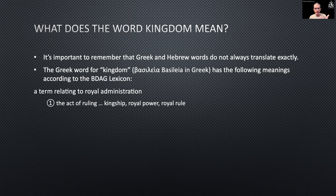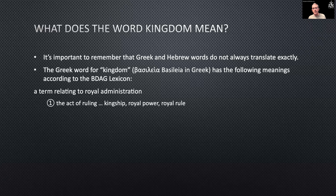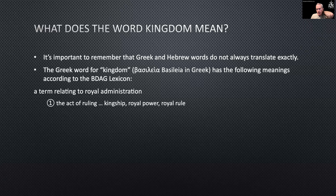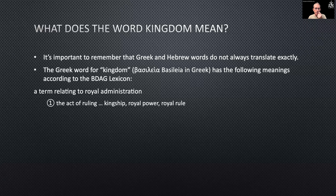When we use the word 'kingdom,' we don't mean any of that — we mean a place. Like the Kingdom of Brunei, the Kingdom of Saudi Arabia, or the United Kingdom. When we use 'kingdom,' we mean a territory or a country ruled by a king. But the first and primary definition in Greek doesn't mean that at all. It means the royal administration, the act of ruling, the kingship, the power of the king, the rulership of the king.